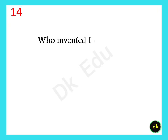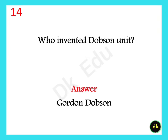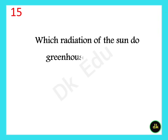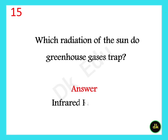Who invented the Dobson unit? Gordon Dobson. Which radiation of the sun do greenhouse gases trap? Infrared radiations.